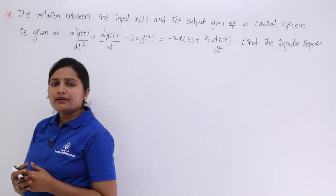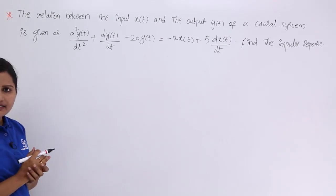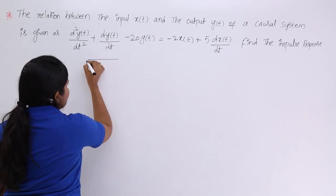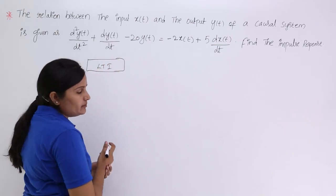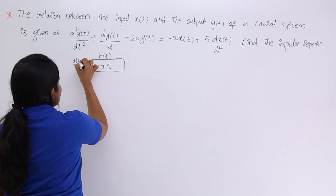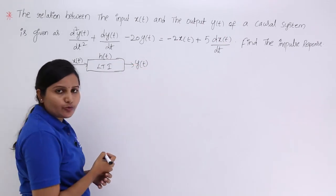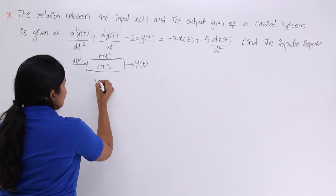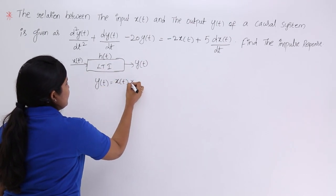We need to find out the impulse response. Whenever you hear about input, output, and impulse response, you need to think about an LTI system. For any LTI system with impulse response h(t), if the system is excited with signal x(t) and produces response y(t), the output is equivalent to the input convolved with the impulse response.